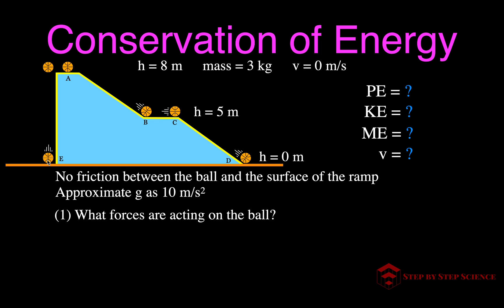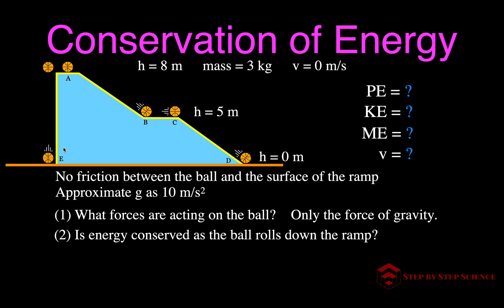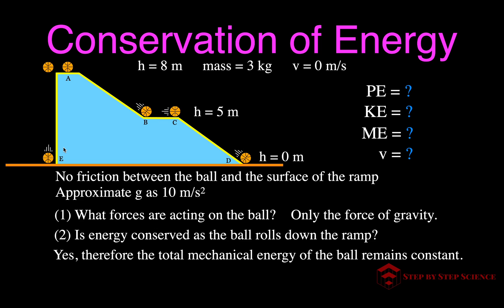We need to ask ourselves what forces are acting on the ball as it comes down the ramp. Because we said there's no friction, the only force acting on the ball is gravity. That means energy is going to be conserved — no energy is lost to heat due to friction. Therefore, mechanical energy is going to be conserved, remaining constant at any point along the path. The mechanical energy is simply the potential energy plus the kinetic energy.